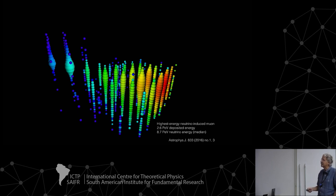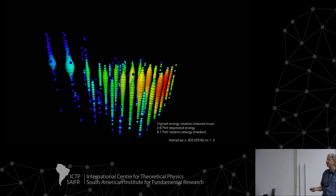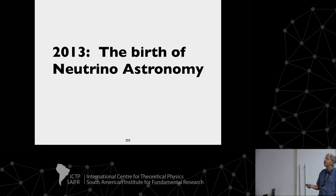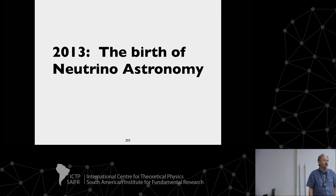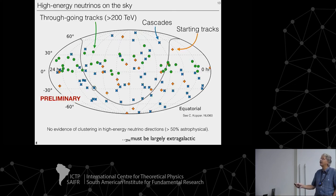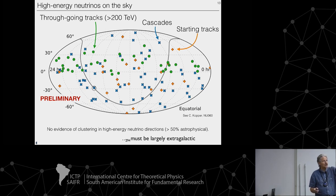The highest measured event deposited 2.6 PeV in the ice, implying the originating neutrino was about 9 PeV. Looking at the sky map of detected neutrinos over time — including track-like events, cascades, and starting tracks — the distribution is rather diffuse. There is no prominent source, no sign of a galactic disk, suggesting the neutrinos are extragalactic.